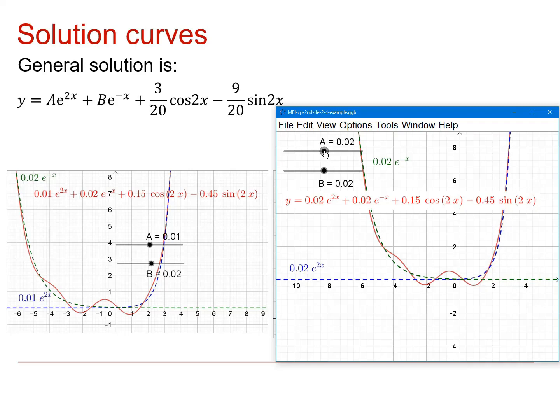If we do a similar thing for b, the same thing happens, but it happens on the left-hand side this time. And you'll see we haven't got any e to the minus x's. And e to the 2x is vanishingly small back here. So everything is being driven by the cos and sine functions.